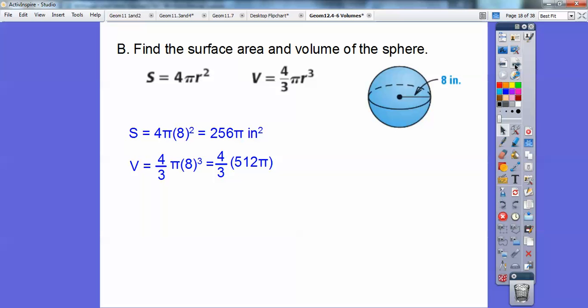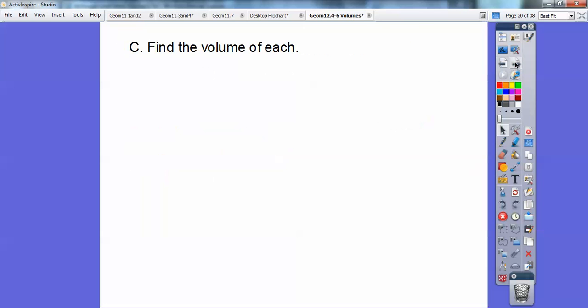Volume, just four-thirds π times 8 cubed, and you've got to cube the eight first, which is 512, and then I'm going to multiply. Nothing cancels. Three doesn't go into 512 evenly, so 512 times 4 is 2,048π all over 3, and it's in feet cubed. Oops, it's inches cubed. That should be in inches cubed right there. Alright, my bad. I'm not going to change it right now, but it should be inches cubed.